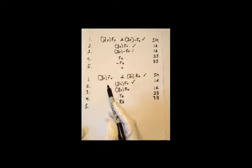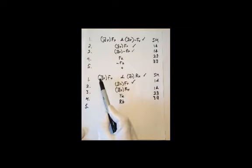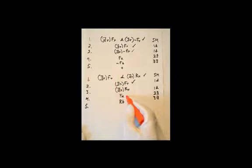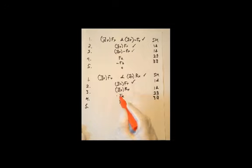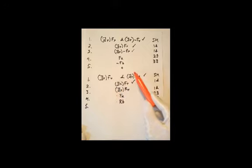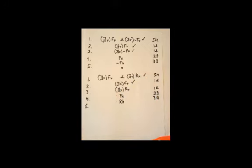One way in which the sentence at the top of the tree can be true is if 'a' is friendly and 'b' is a republican. That's one way it can happen that there's someone who is friendly and someone who is republican.